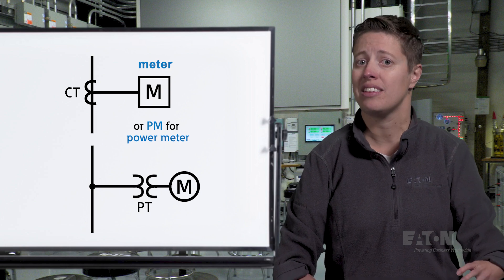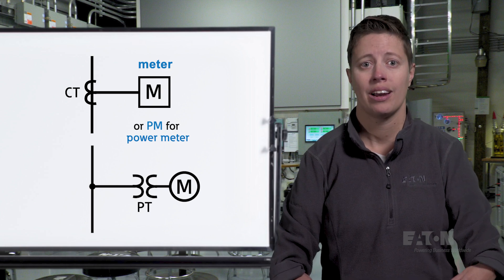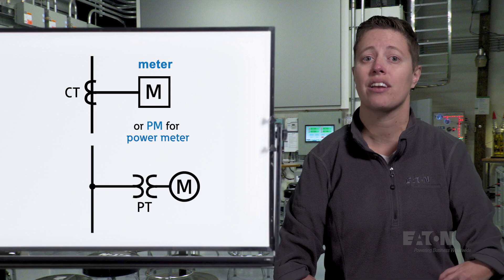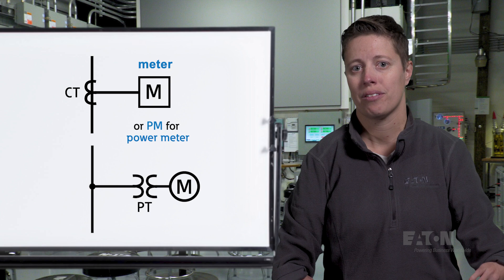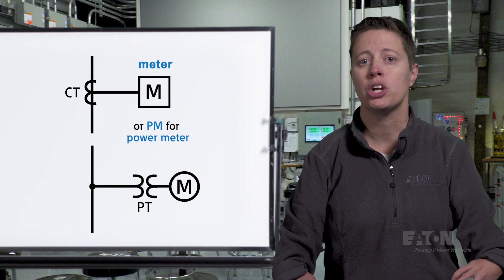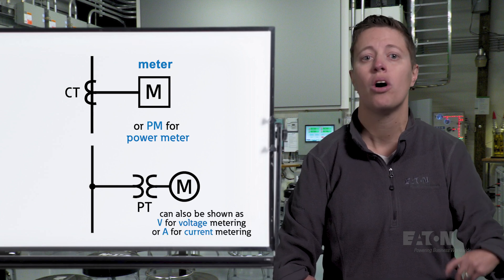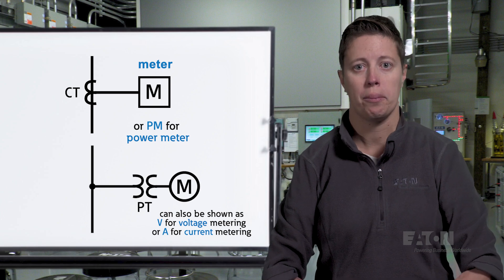We need to be careful here as we already discussed an encircled M in context of a motor load. If the M is fed from CTs, it is a power meter. If the M is directly connected to the load side of distribution equipment, it is likely a motor. A meter may also be shown as a V indicating voltage metering or an A indicating current metering.